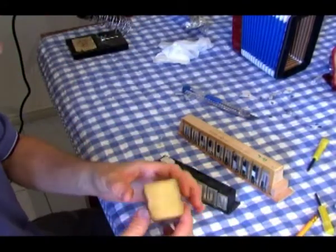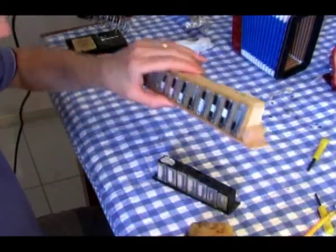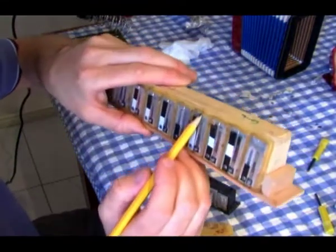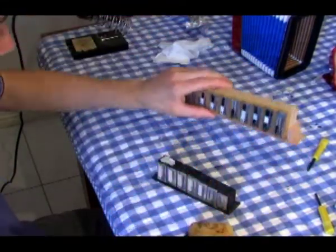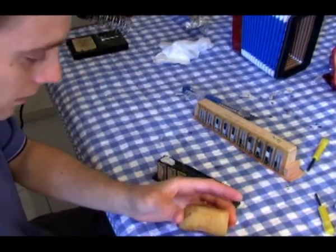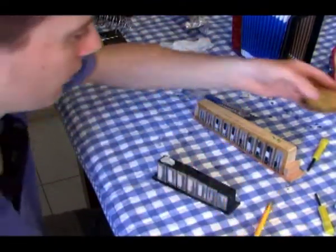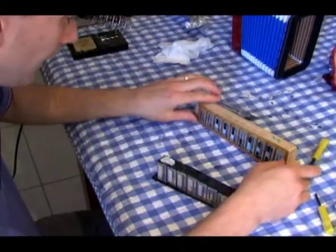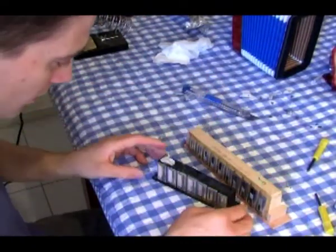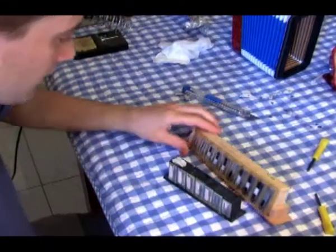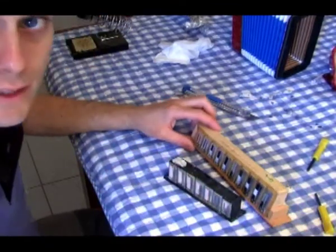When you buy a Melodian or button accordion, quite often, you can see that the beeswax is around there. Quite often, it's mixed with rosin, which is what you rosin the bow with for a violin. And just thought I'd grab a little bit extra, so I can make sure that the reed is sealed in.